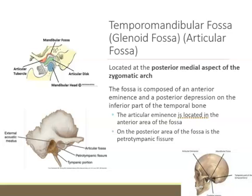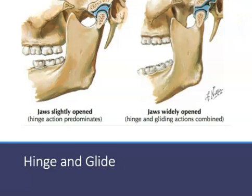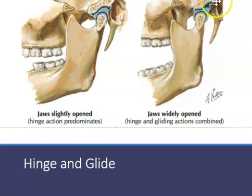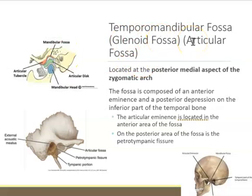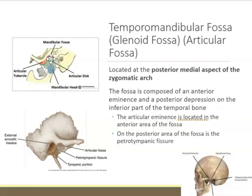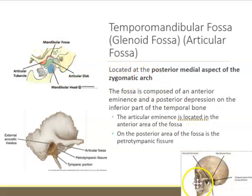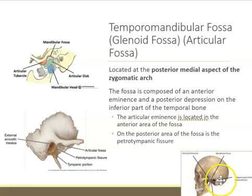The mandibular fossa — also called the temporomandibular fossa, glenoid fossa, or articular fossa — all mean the same thing. This depression outlined in red is your fossa. There may be a test question asking where the temporomandibular fossa is located: it is located just behind the zygomatic arch — posterior to the zygomatic arch, which is your cheekbone.